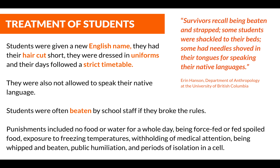Students were given a new English name, they had their hair cut short, and they were dressed in uniforms, and their days followed a strict timetable. They were also not allowed to speak their native language. Students were often beaten by school staff if they broke the rules. Punishments included no food or water for a whole day, being force-fed or fed spoiled food, exposure to freezing temperatures, withholding of medical attention, being whipped and beaten, public humiliation, and periods of isolation in a cell.